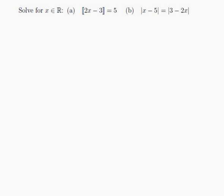Solve for x in R. Part A: The floor of 2x minus 3 is equal to 5. Part B: The absolute value of x minus 5 is equal to the absolute value of 3 minus 2x. So let's do part A. The floor of 2x minus 3 is equal to 5.